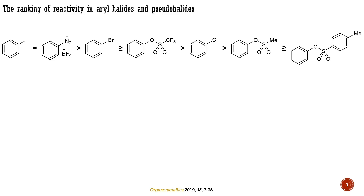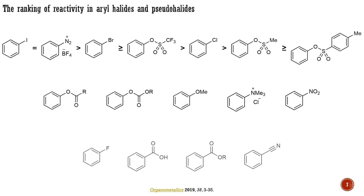Reactions involving aryl chlorides, mesylates, and tosylates are typically facilitated by bulky and strong sigma-donor ligands. Other electrophilic coupling partners, such as acetates, nitro compounds, and derivatives of carboxylic acids, either require nickel-based catalysts or specific ligands and reaction conditions.